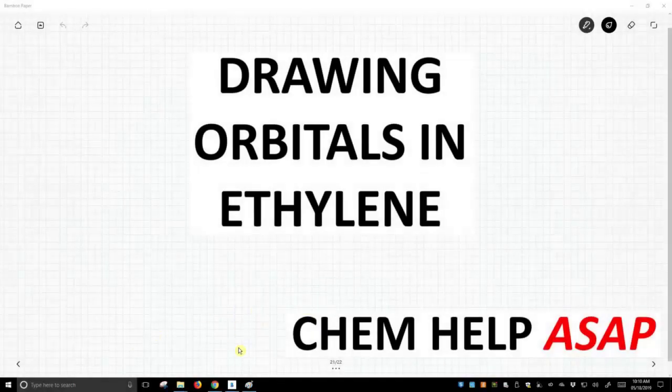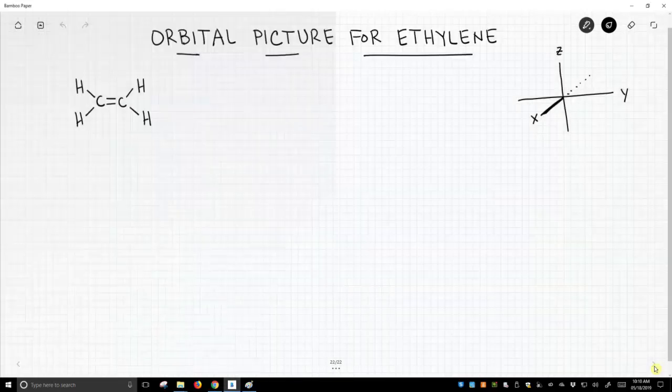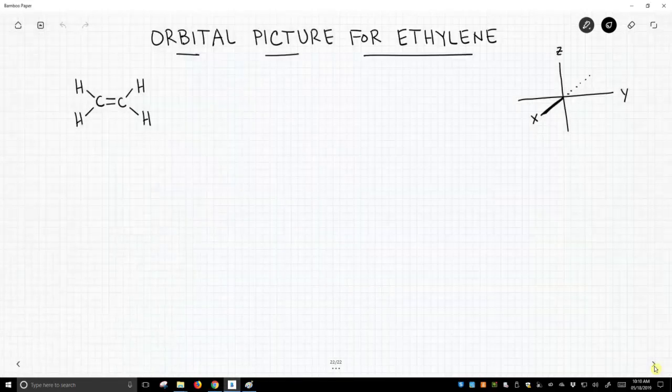Good day to you from Chem Help ASAP. Let's draw an orbital picture for ethylene, or sometimes called ethene.